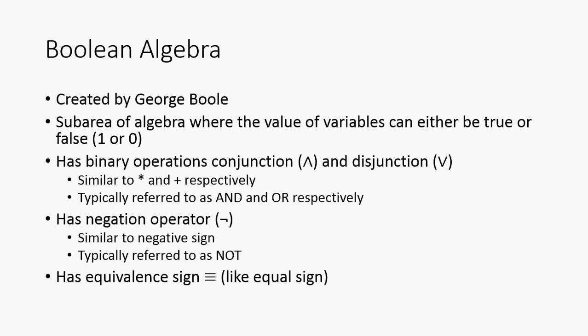Boolean algebra was created by George Boole. It is a sub-area of algebra where the values of the variables can either be true or false, so zero or one. One typically represents true, and zero represents false.